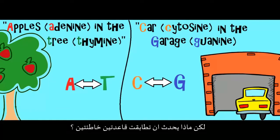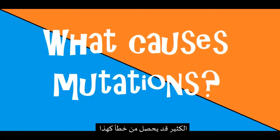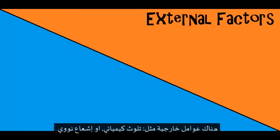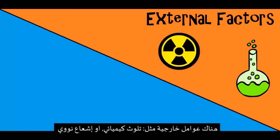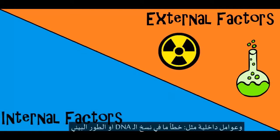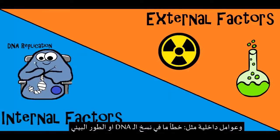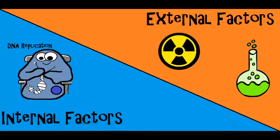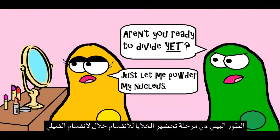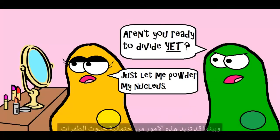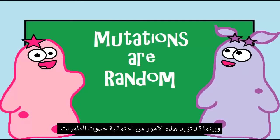What happens if the wrong base matches up? Many things can cause an error like that. There can be external factors like chemicals and radiation, and internal things too, like something going wrong during DNA replication during interphase. Interphase is a stage that prepares cells to divide during mitosis.